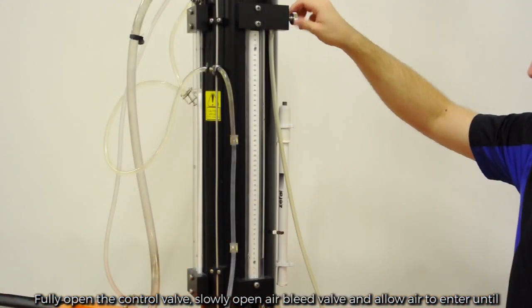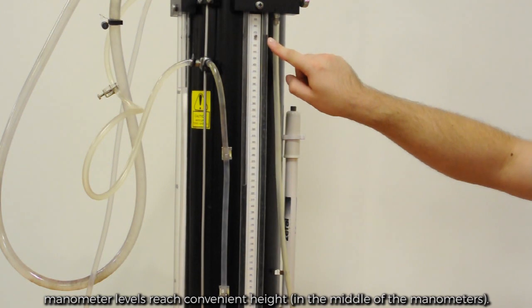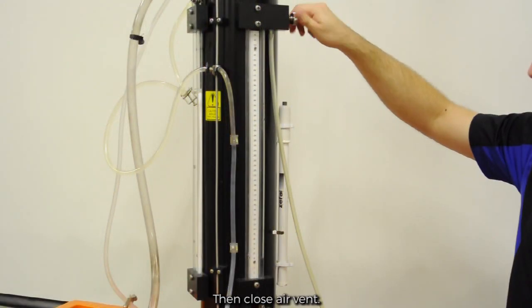Slowly open the air bleed valve and allow air to enter until the manometer level has reached a convenient height. Then, close the air vent.